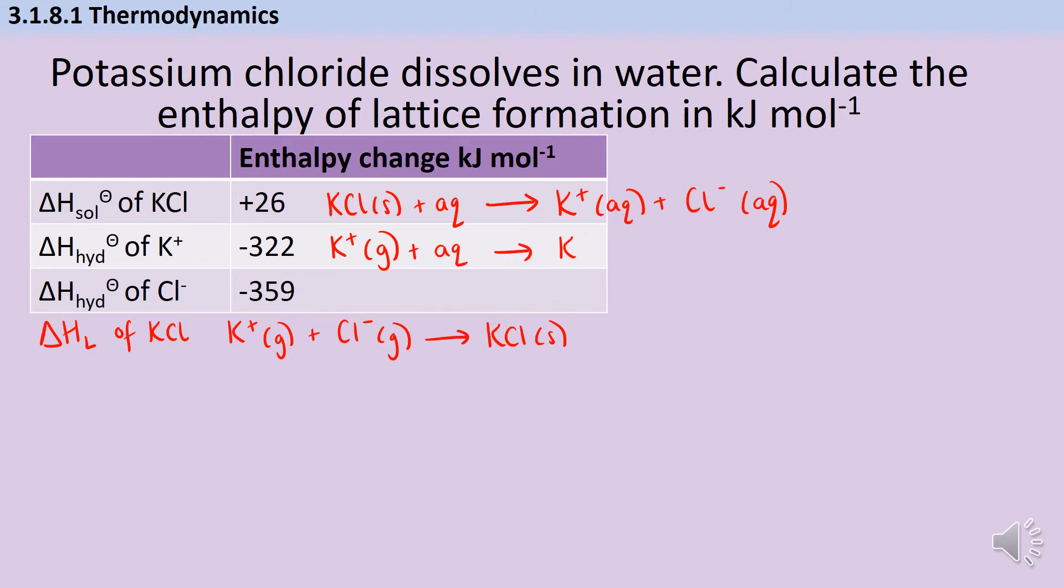So I've got my enthalpies of hydration, where the gaseous ions are surrounded by water to make aqueous ions. And over here we've got the chloride, which again is a gaseous ion surrounded by water to make aqueous chloride ions. Now that I have all of these individual equations, I can start to put them together into a thermochemical cycle.